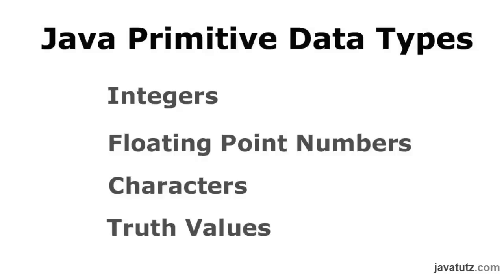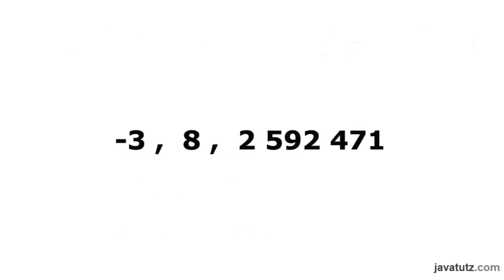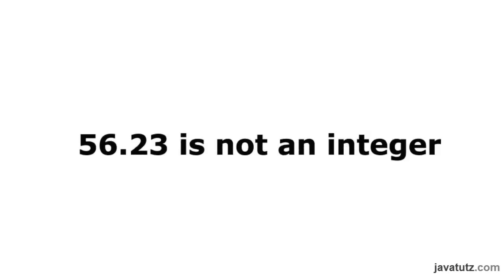You know what integers are — you learned that from your maths teacher. Integers are all positive and negative whole numbers, including zero. Minus 3, 8, 2,592,471 are some integers. But 56.23 is not an integer; it is a floating point number.